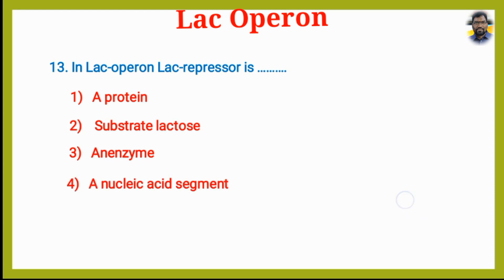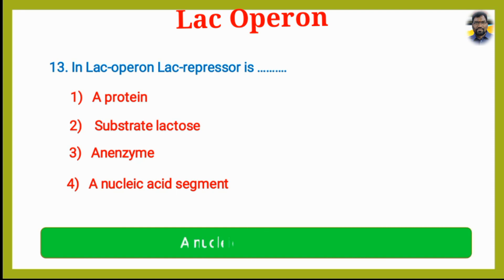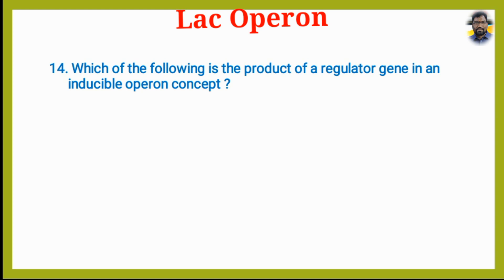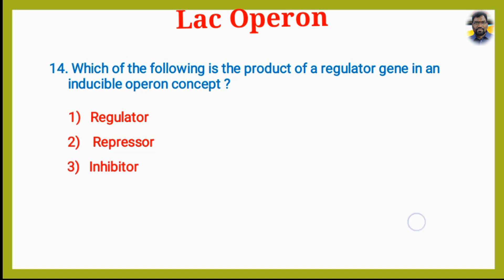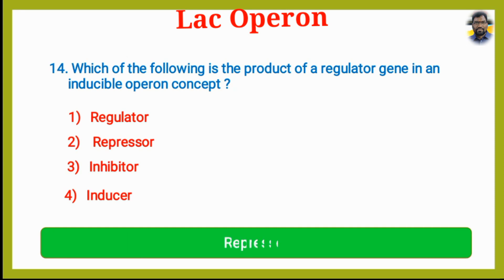Which of the following is the product of the regulator gene in an inducible operon concept? Option 1: Regulator. Option 2: Repressor. Option 3: Inhibitor. Option 4: Inducer. The answer is Option 2, Repressor.